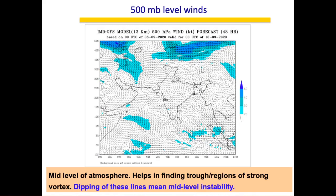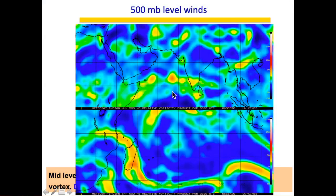The 500 mb mid-level helps find troughs but also regions of strong vorticity. An intense vortex at 500 mb indicates mid-level instability. Cold air parcels unable to sustain at that level will increase vorticity, and this instability propagates all the way to the ground, causing intense weather — sometimes thunderstorms. Vorticity levels at 500 mb wind charts must be examined carefully.